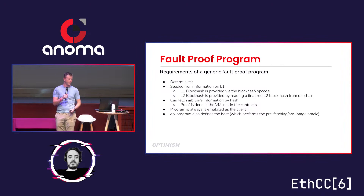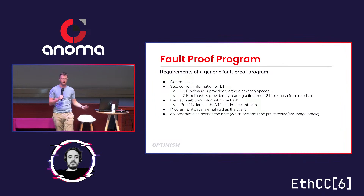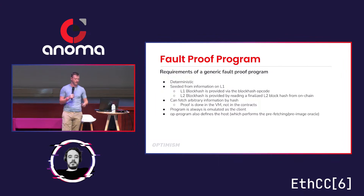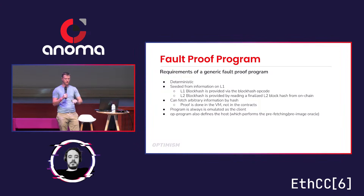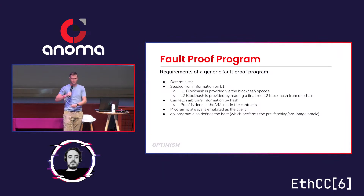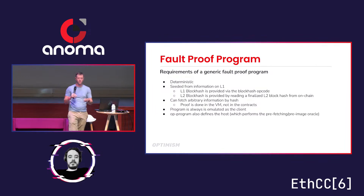In the OP program, because it's an L2 chain, we feed in the L2 block hash, but that's from finalized information on L1. Walking through this provenance, you can fetch arbitrary information by hash, as long as you're fine with it via the proofs. When you have this program, it's emulated, and then we have a host for it.